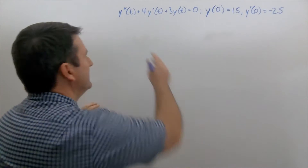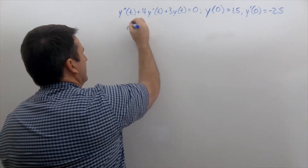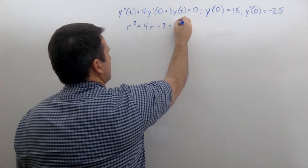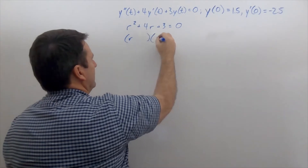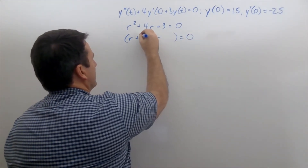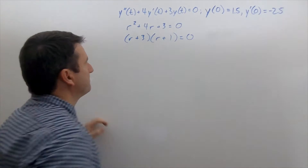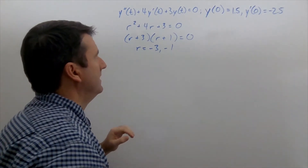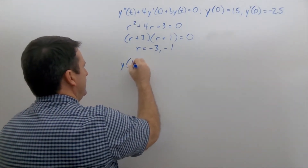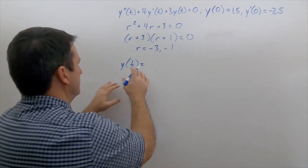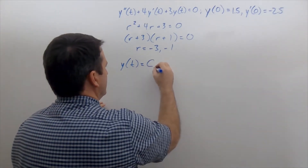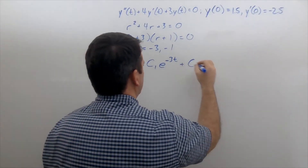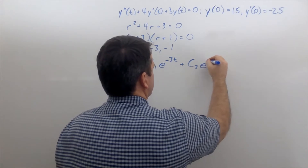We can solve this using a characteristic equation: r² + 4r + 3 = 0. We factor that as (r + 3)(r + 1), so r = -3 or r = -1. Our general solution is y(t) = c₁e^(-3t) + c₂e^(-t).